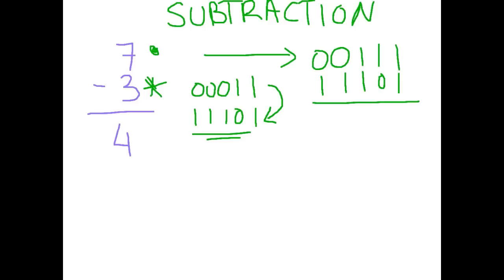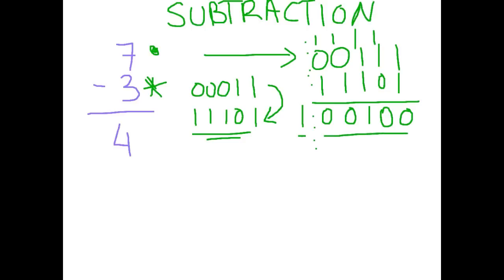Adding: 1 and 1 is 0 carry the 1; 1 and 1 and 0 is 0 carry the 1; three 1's is 1 carry the 1; two 1's is 0 carry the 1; two 1's is 0 carry the 1. Now we have 5 bits — we truncate that extra carry. The leftmost bit of our 5-bit result is a 0, so we know it's positive. Looking at place values 1, 2, 4, 8, 16 — we've got a 4 there, so our answer is positive 4.